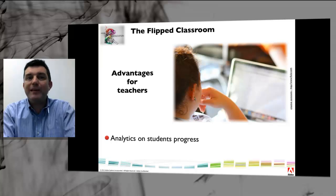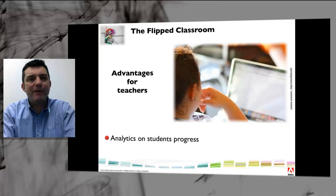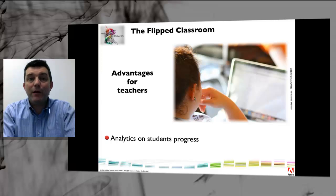Some students get it the first time around. The flipped model allows teachers to quickly identify these students and potentially put them to work as peer tutors to help students who are struggling.